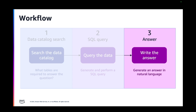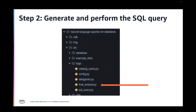When we generate the SQL query, we get a SQL query and also an explanation of the SQL query, which helps us check that the LLM has understood our question. The last step is to write the answer — just generating a response in natural language. We take all the information from the previous steps and ask the LLM to generate an answer in natural language. All the code for this is in the final_answer.py file.